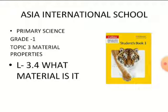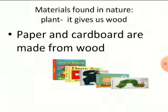A few things which are present in nature are called natural materials, like plants and animals. From these materials we can further make new materials, or we can use these materials to make a new material out of them.